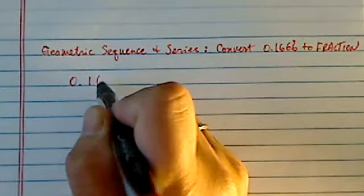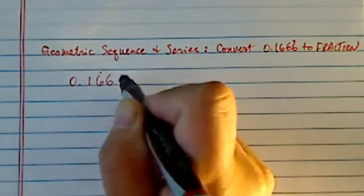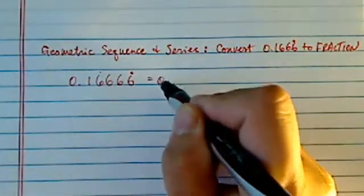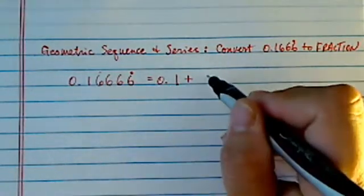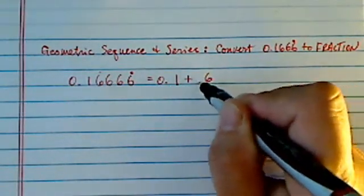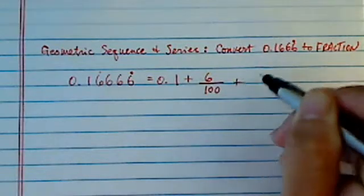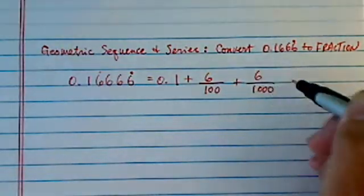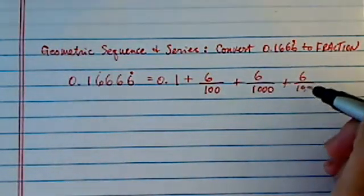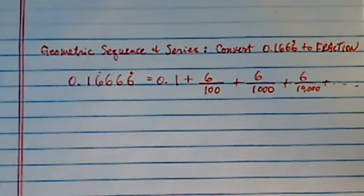0.16, let's write a couple more terms repeating, is equal to 0.1 plus 6 over 100 plus 6 over 1,000 plus 6 over 10,000. You got the picture, so on and so forth.